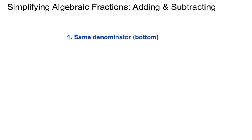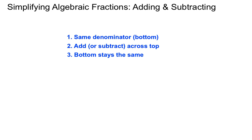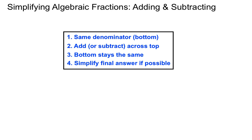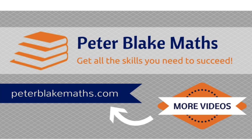To summarize: to simplify algebraic fractions by adding and subtracting, first get the same denominator, then add or subtract across the top depending on the question, keep the bottom the same, and simplify the final answer if possible. A few tricky examples there — I hope they help. You can replay the video if you're not sure. Thanks for listening.